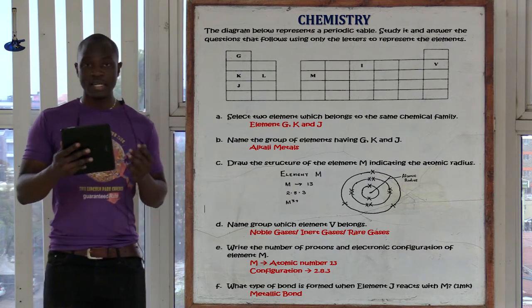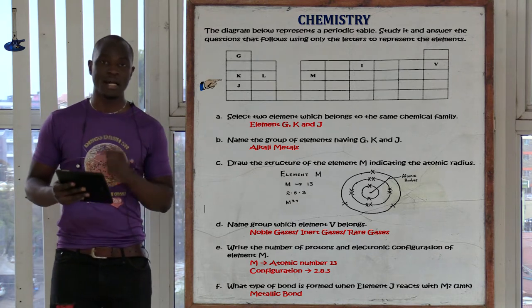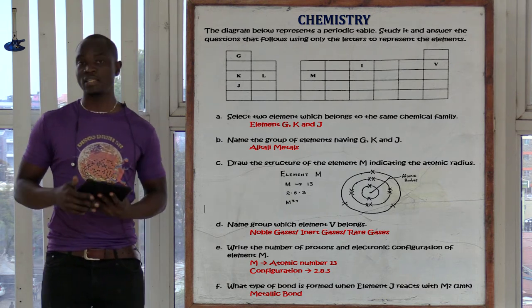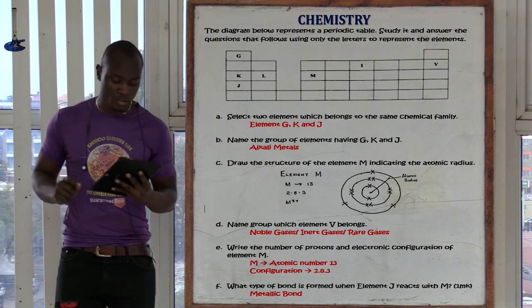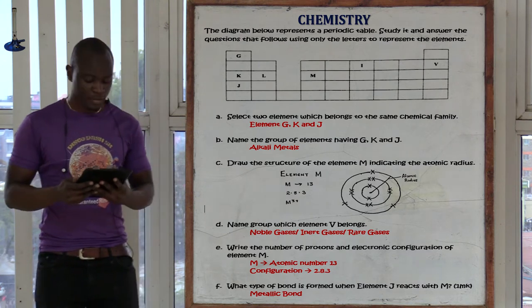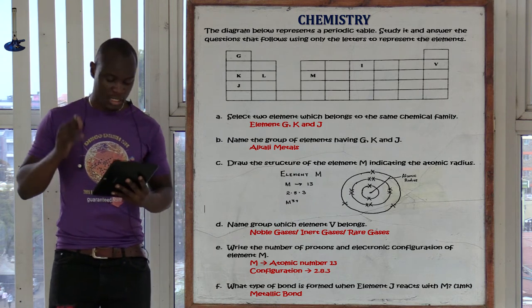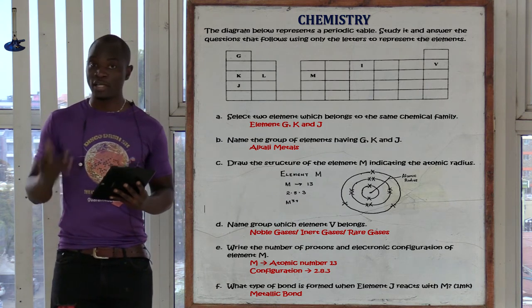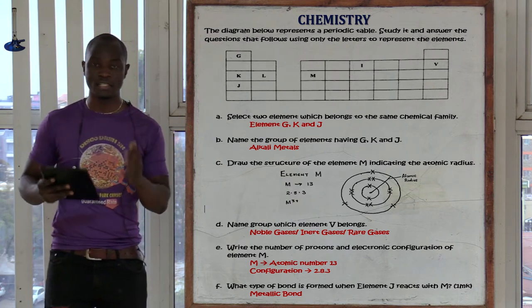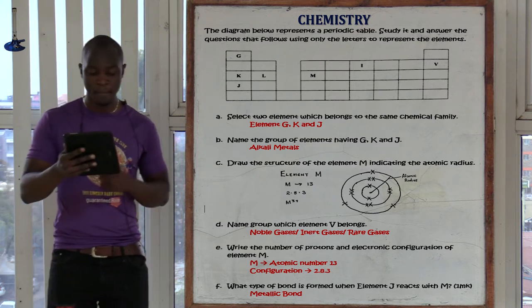Question B asks: name the group of elements having G, K, and J. The group of elements having G, K, and J is referred to as the alkali metals — group number one. Note that we have only been given the letters G, K, and J. They didn't say hydrogen, sodium, and potassium. Only the letters were given, and that is what we use. That group is referred to as the alkali metals.